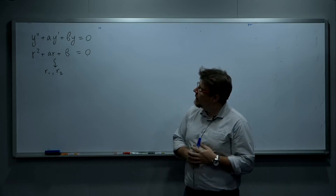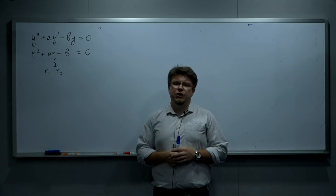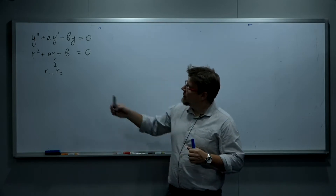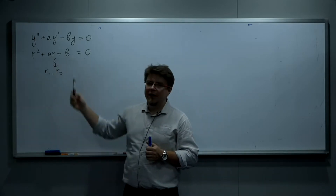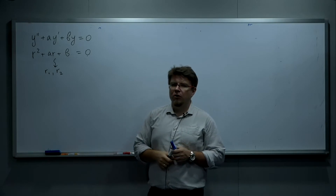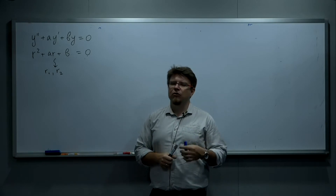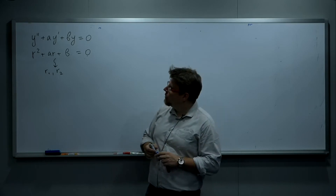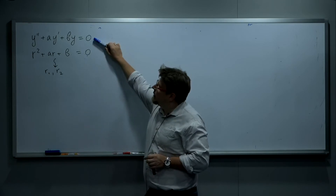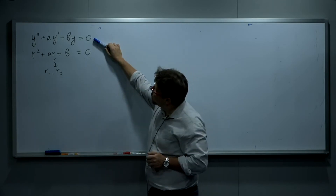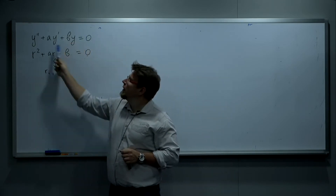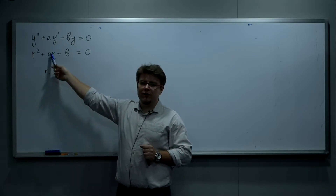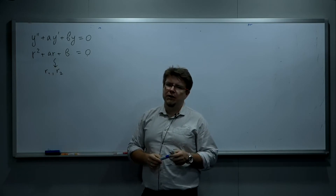First I'm going to explain a little bit more about the relation between the signs of the coefficients a and b and the behavior of solutions of a second-order linear homogeneous equation with constant coefficients. So recall that if we have such an equation, it looks like this, and we set up the corresponding characteristic equation, which is an algebraic equation in R.